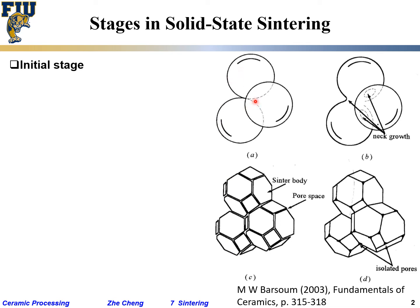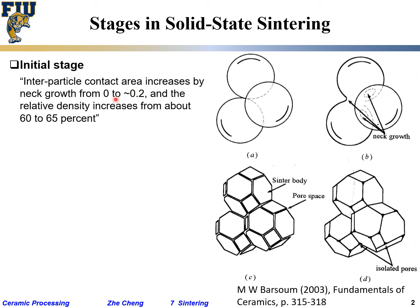People also try to build geometric models to understand sintering. Initially, we assume particles are spheres touching each other only at a single point — mathematically a non-existent area. After a certain time, a so-called neck develops where the contact point enlarges into a finite area. This is the initial stage, where the particle contact area increases from essentially zero to roughly 0.2 of the projected area between the two particles. In this stage, density doesn't increase too much — from roughly 60% for sphere packing up to about 65%.